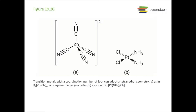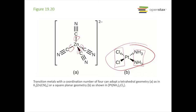For coordination number 4, you can have tetrahedral geometry like in A, where zinc has a coordination number of 4 and is tetrahedral, or square planar as in B. The square planar structure shown here is the cis isomer — the NH3 groups are on the same side and the chlorines are on the same side.